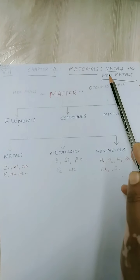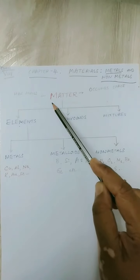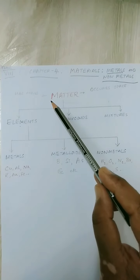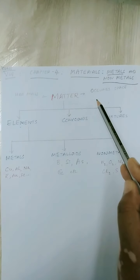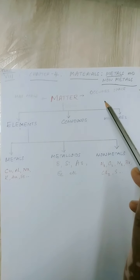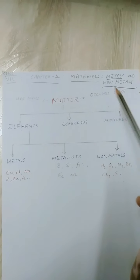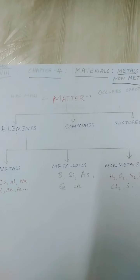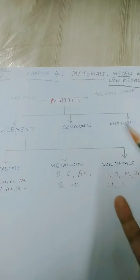In order to learn more about metals and non-metals, you should have a clear idea about what is matter. Matter is anything that has mass and occupies some space. Also its presence should be felt by our senses — that is, matter is anything that has mass, occupies space, and should be perceived by our senses.